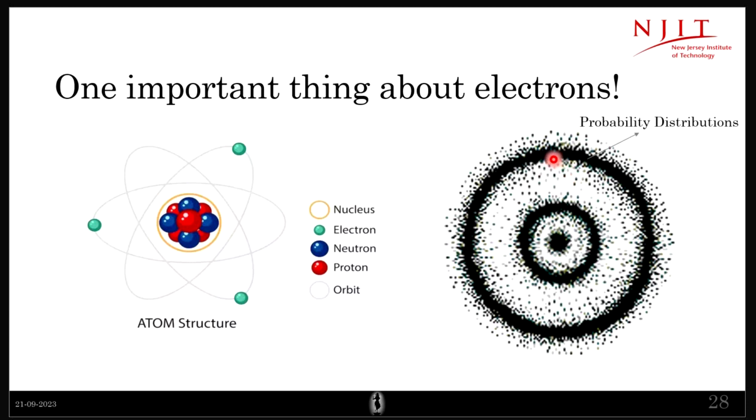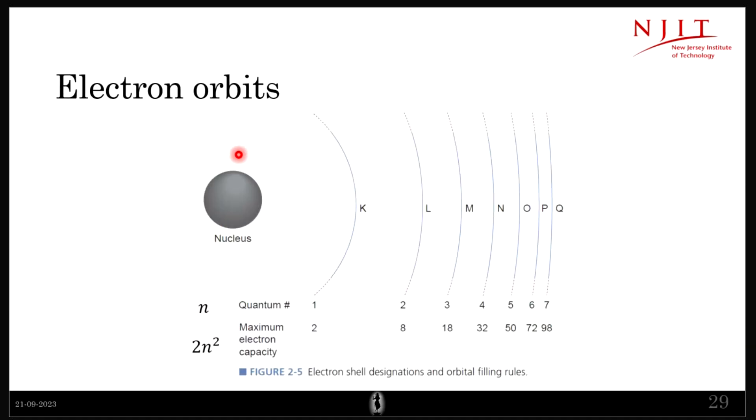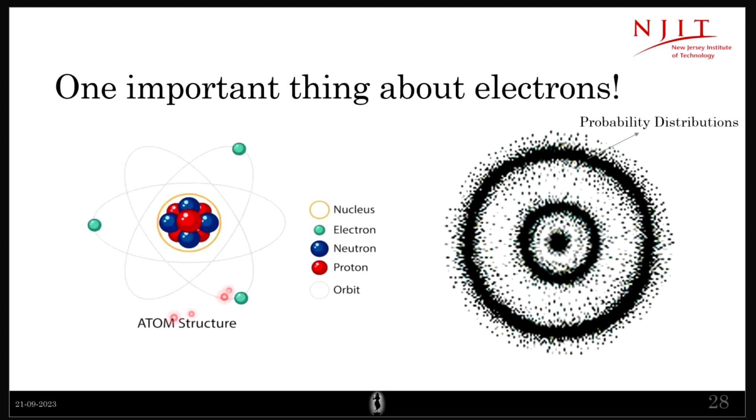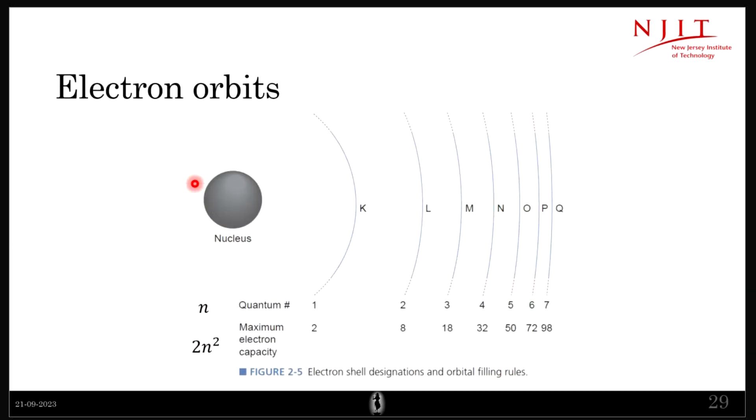So I just want to introduce you that it's a probability distribution—we don't know where exactly the electron is. We will actually, mostly for the entire lecture, use this model only where we'll assume that we know the location of the electron. But just keep in mind that is not true. Everybody okay with this?